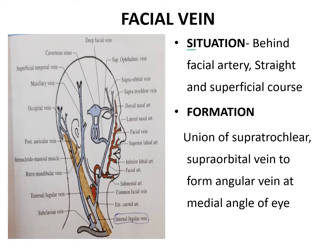Now we will see about the situation of the facial vein. The facial artery is visible here, and our facial vein is situated behind the facial artery. The facial vein is almost straight, unlike the facial artery which is tortuous. The facial vein is also superficial compared to the facial artery, which is deeper.